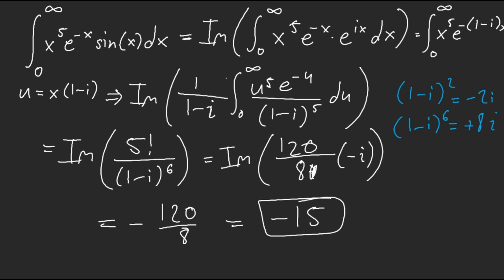So complexifying the integral actually made it a lot simpler. We used the gamma function — the factorial integral — and took advantage of that. The most annoying part was just the complex algebra.